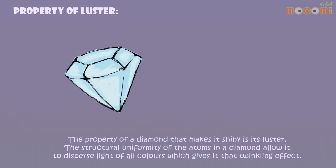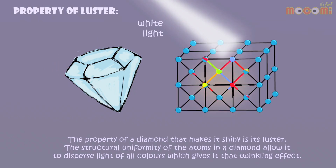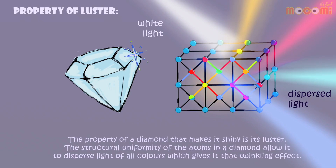The property of a diamond that makes it shiny is its luster. The structural uniformity of the atoms in a diamond allow it to disperse light of all colours, which gives it the twinkling effect.